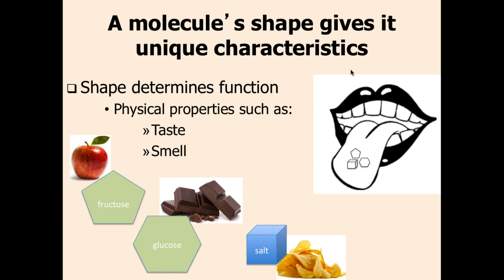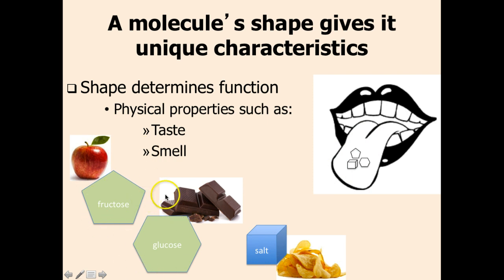A molecule's shape is going to give it unique characteristics, such as the physical properties of taste and smell. In this highly stylized diagram of a tongue, you see that the tongue has different receptors. Each one is attuned and prepared to receive information about a particular taste. So we recognize the pentagonal shape of the pentose sugar fructose as being sweet, and the hexose sugar glucose as being even more sweet. We recognize the cubic nature of salt as being, well, salty.